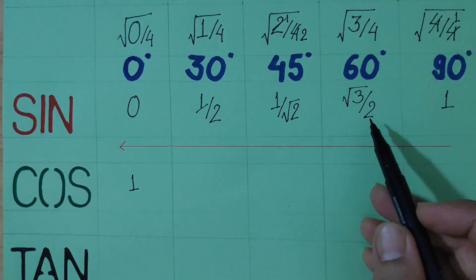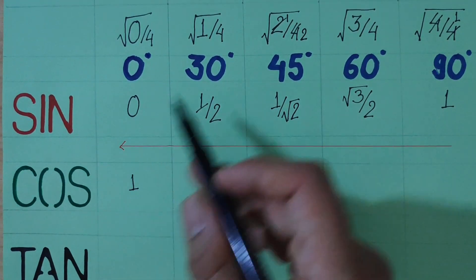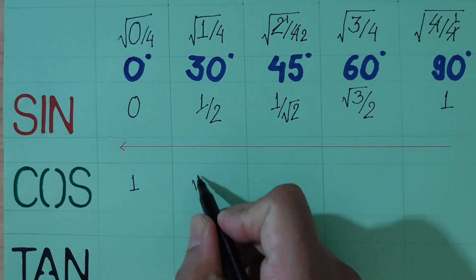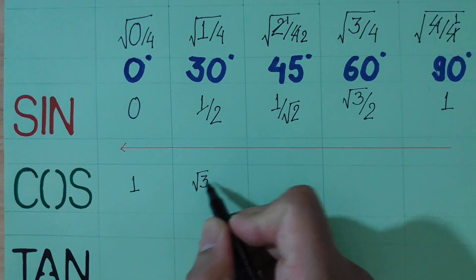Now sin 60 is root 3 by 2, cos 30 is root 3 by 2.